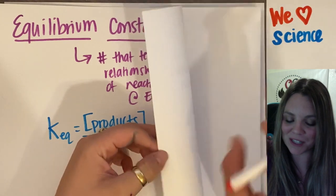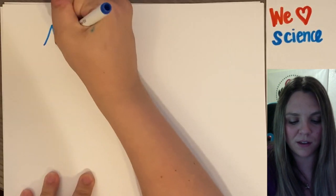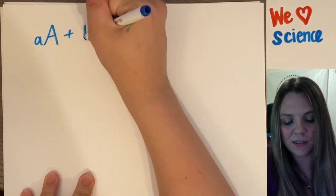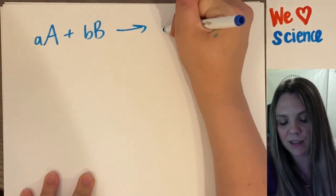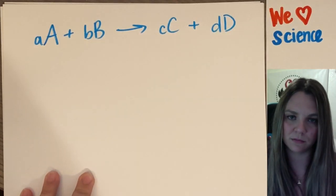And you get this horrible equation, right? Where we do the generic equation. So you have aA plus bB reacts to make cC plus dD.